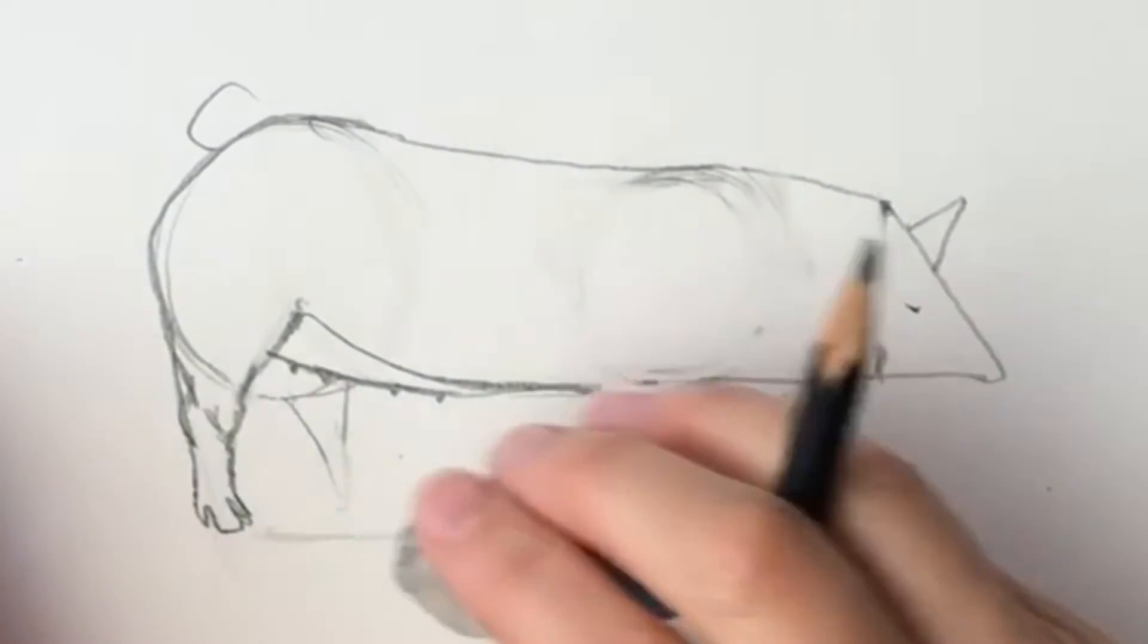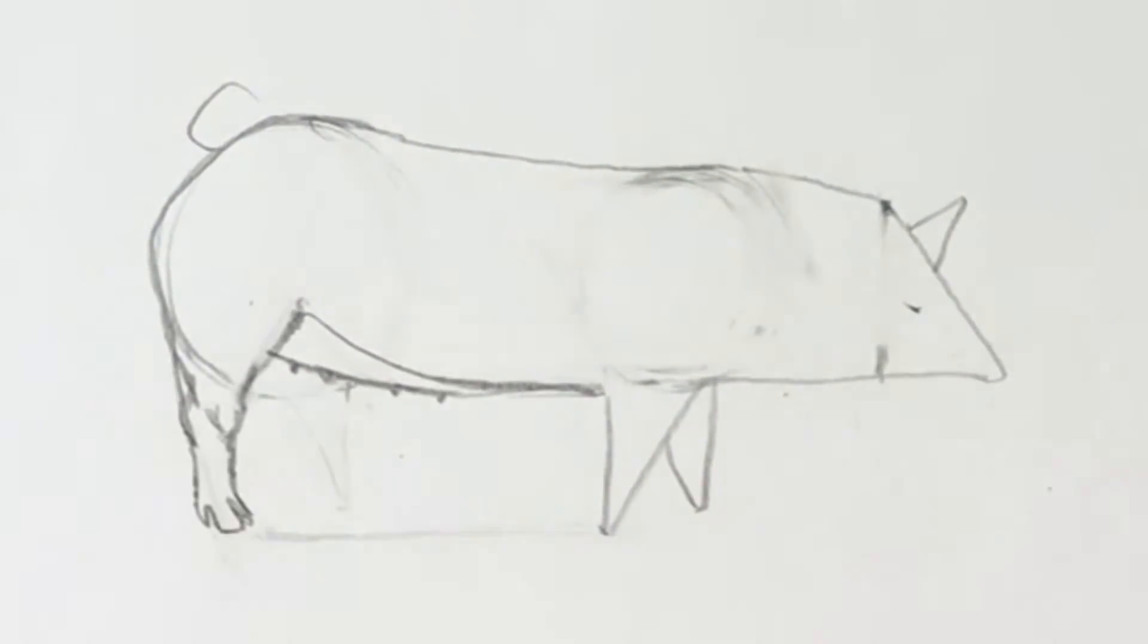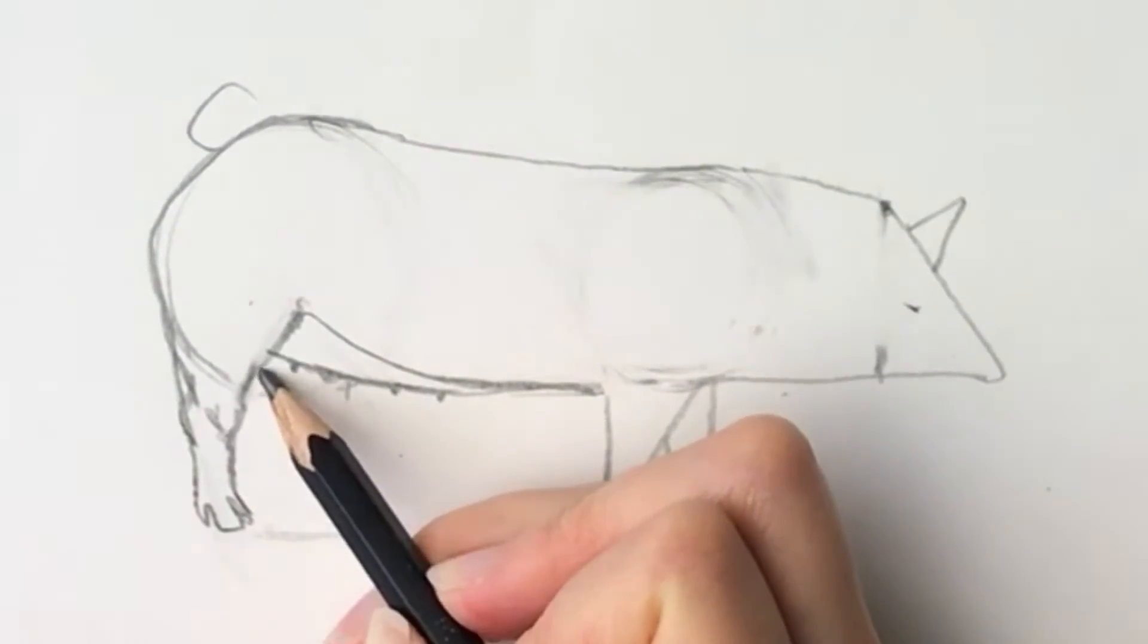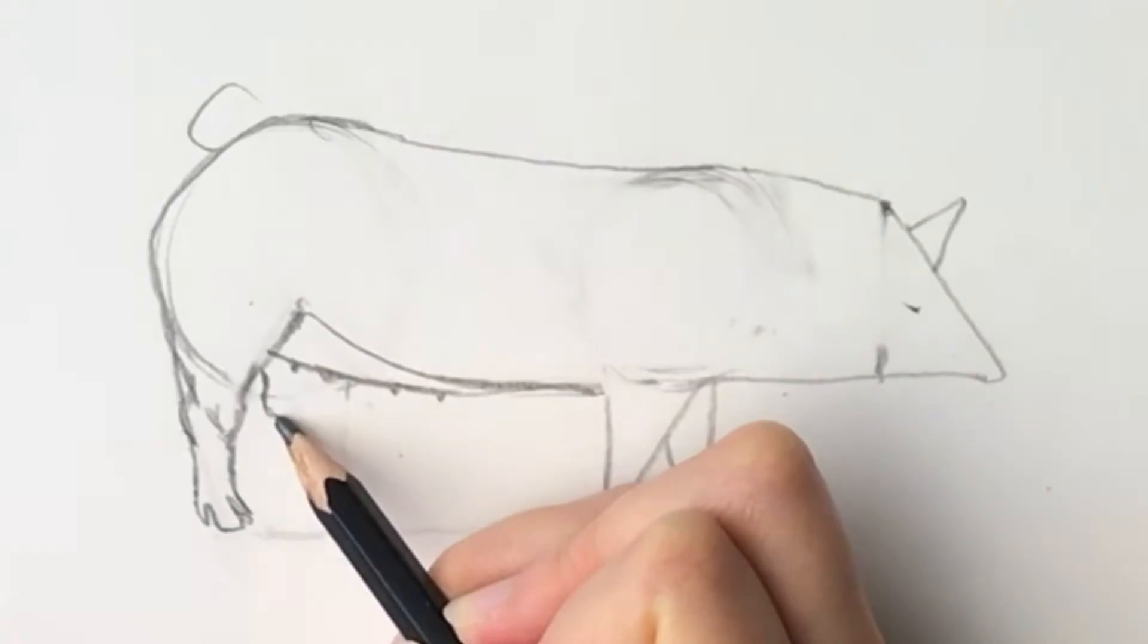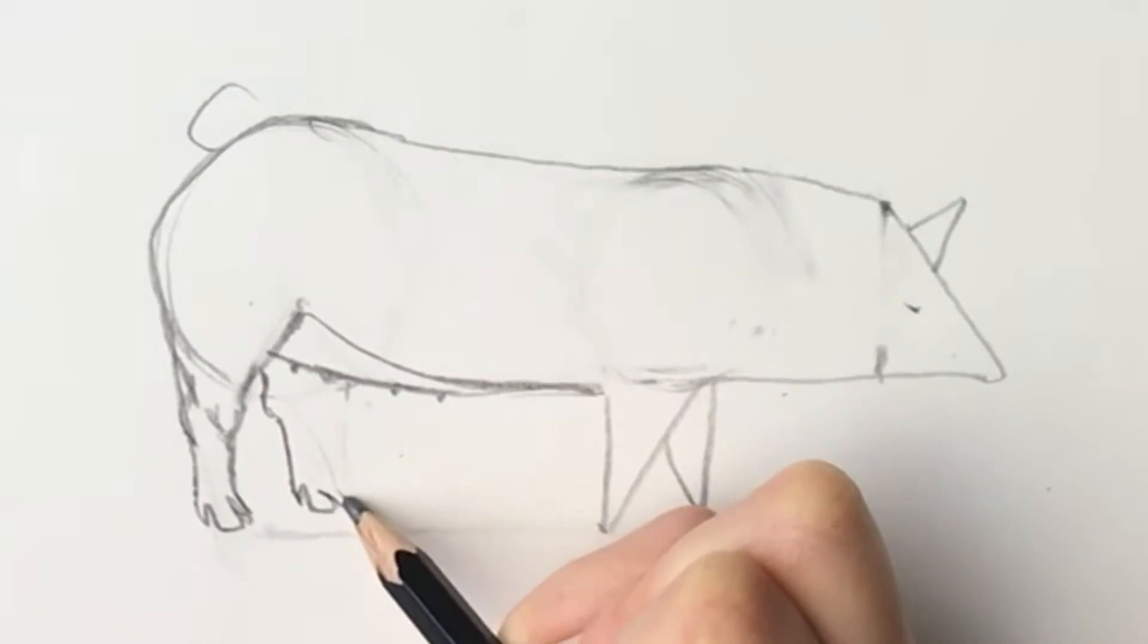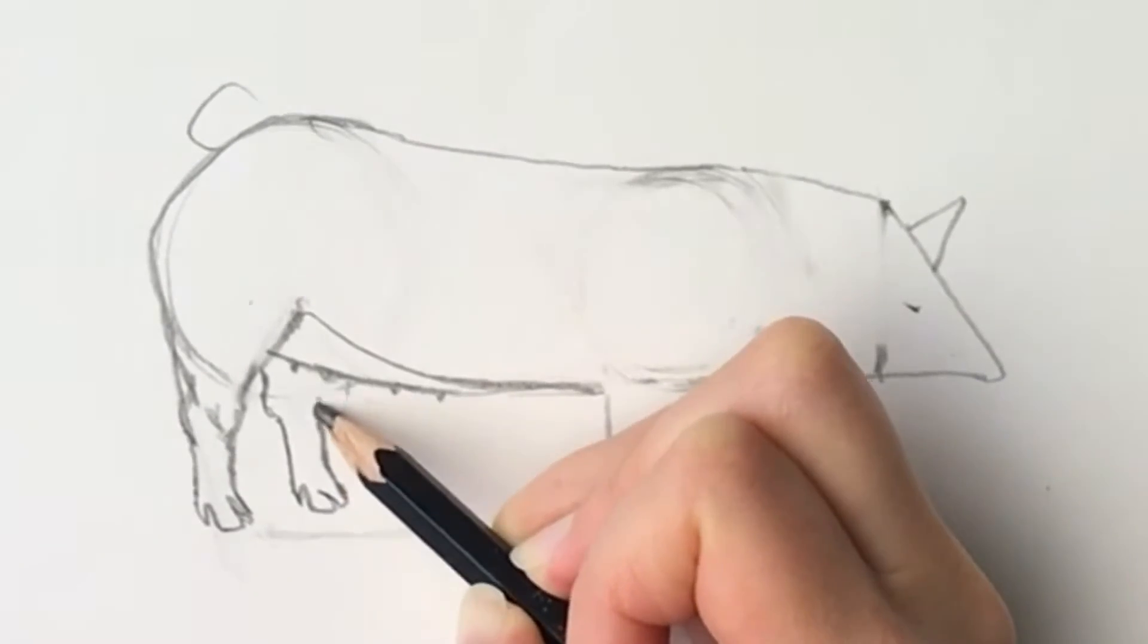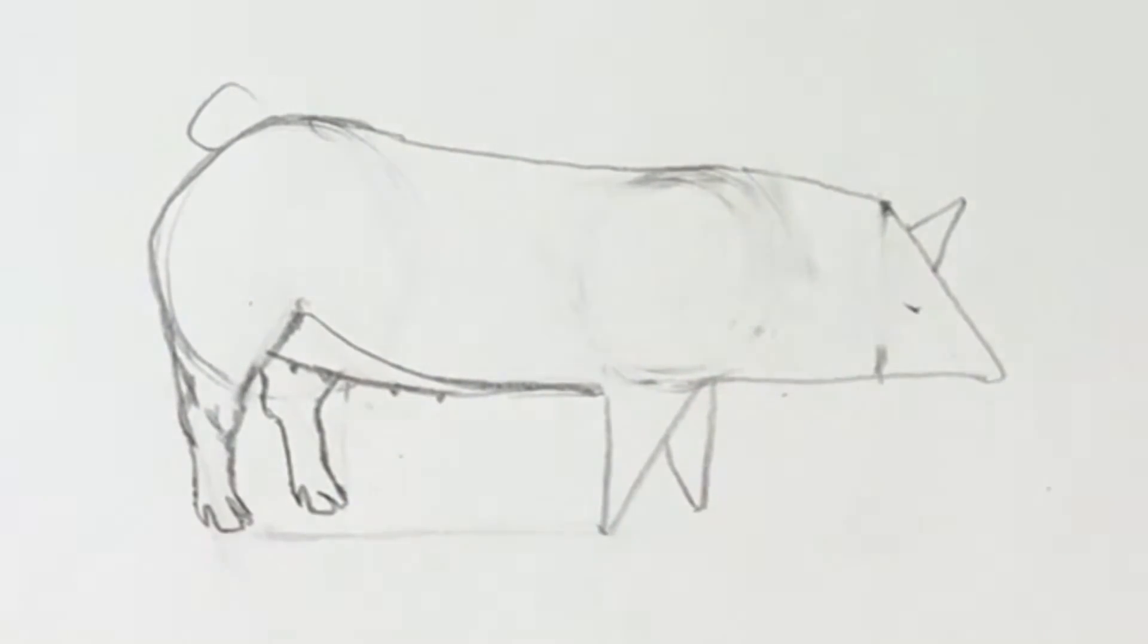We're going to draw the back leg. So just getting rid of the guidelines. We're just going to draw in this back leg. Like this. And then the trotter. And then the trotter going up. Like that.